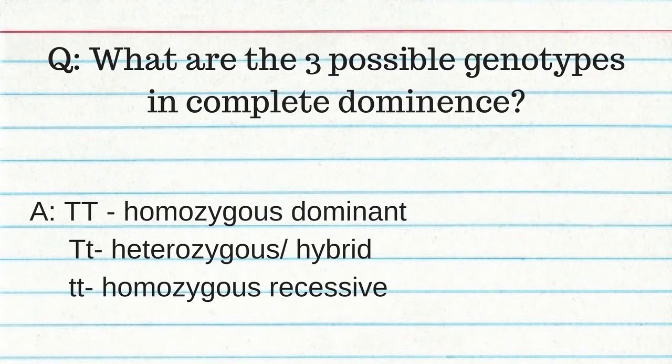Gene linkage is when genes for two different traits are on the same chromosome and are inherited together. Gregor Mendel is the father of modern genetics. An individual has two alleles for one trait — one from the mother and one from the father. A genotype is your genetic makeup. A phenotype is your physical characteristics as a result of your genetic makeup. The three possible genotypes in complete dominance: homozygous dominant (TT), heterozygous or hybrid (Tt), or homozygous recessive (tt).